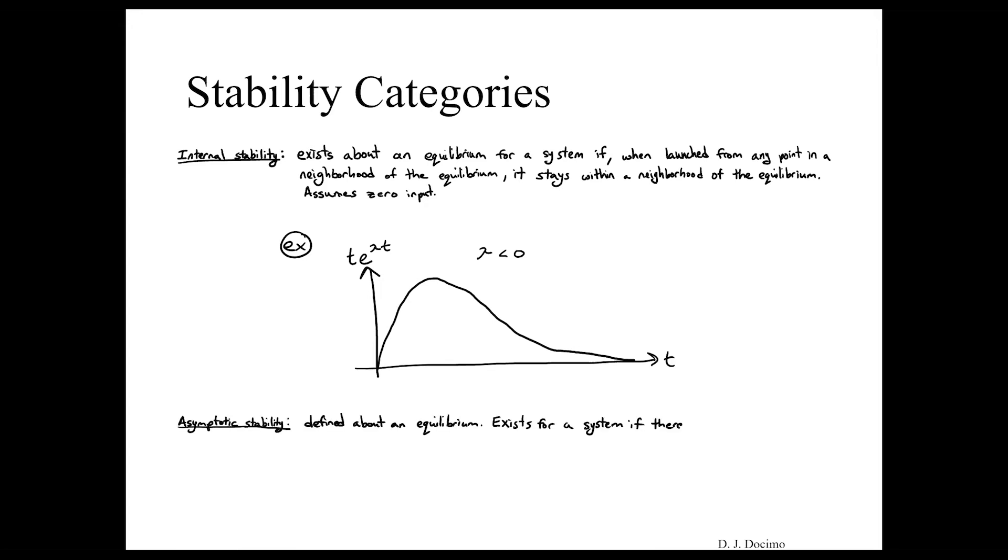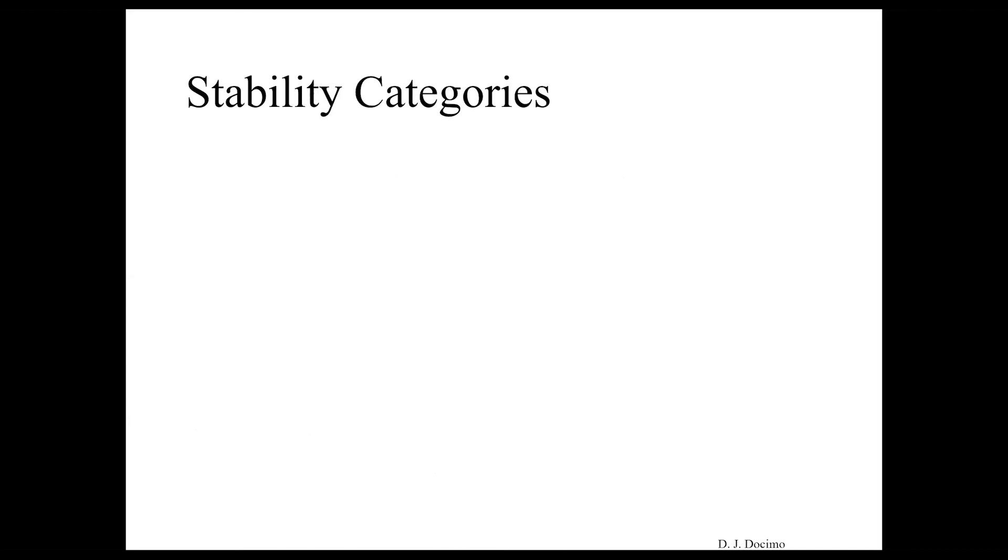Now, asymptotic stability can be defined about an equilibrium and it exists for a system if there exists a quote unquote basin of attraction such that if the system is launched within this basin, it approaches the equilibrium asymptotically.